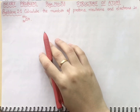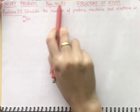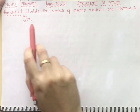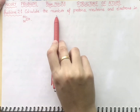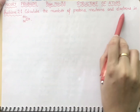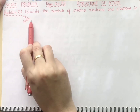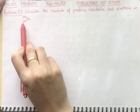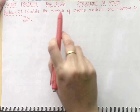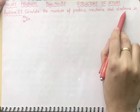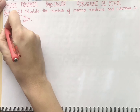Hello students, this is problem number 2.1 from page number 33 of Structure of Atom. In this statement, calculate the number of protons, neutrons, and electrons in bromine-35-80. You are given an atom — bromine — in which the mass number and atomic number are provided, and you are asked to find the number of protons, neutrons, and electrons.